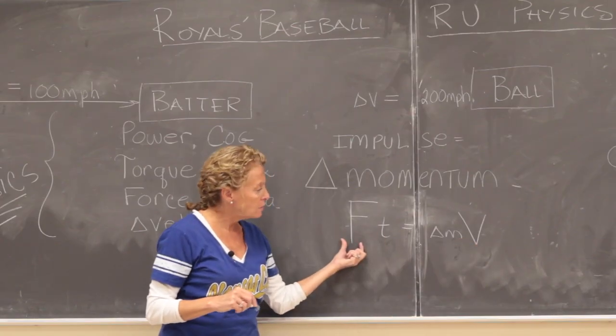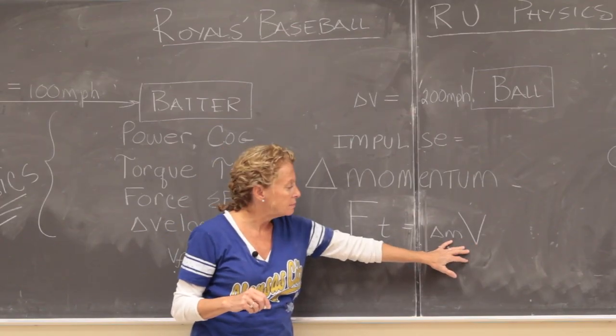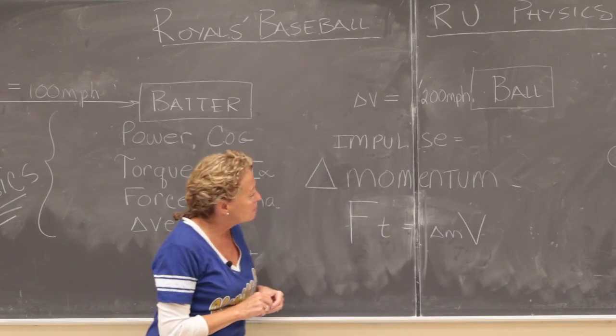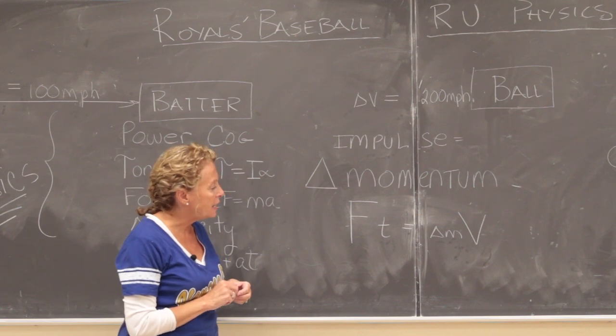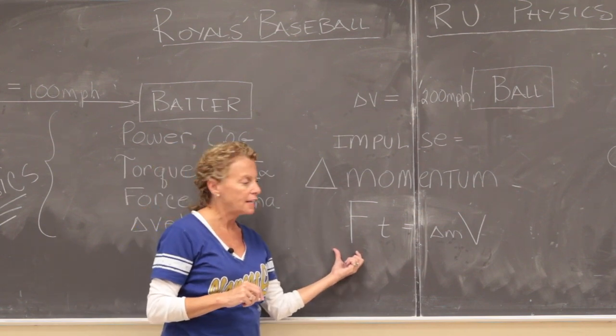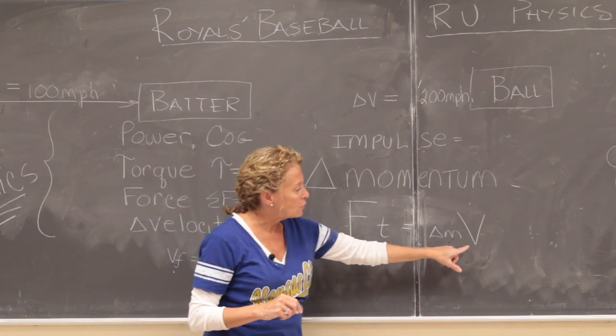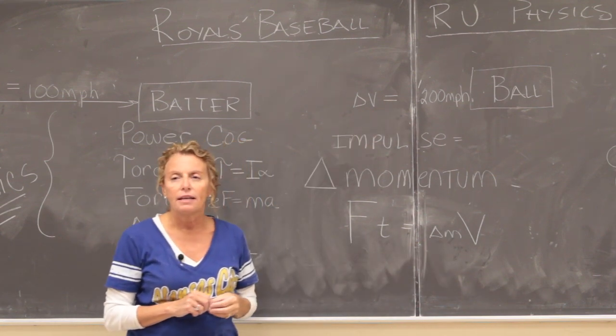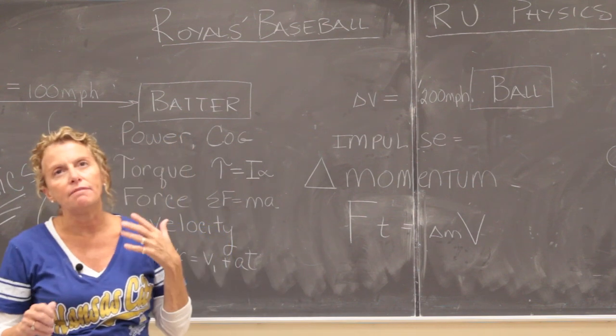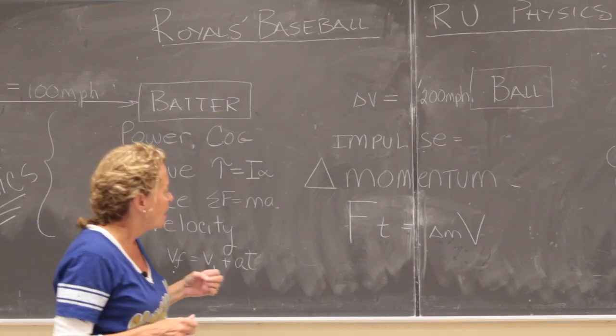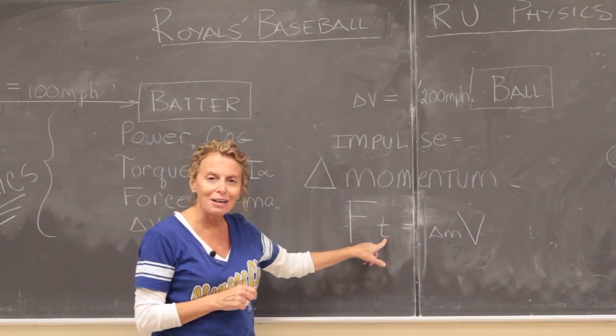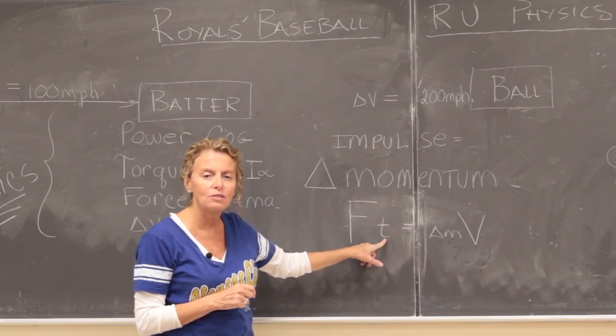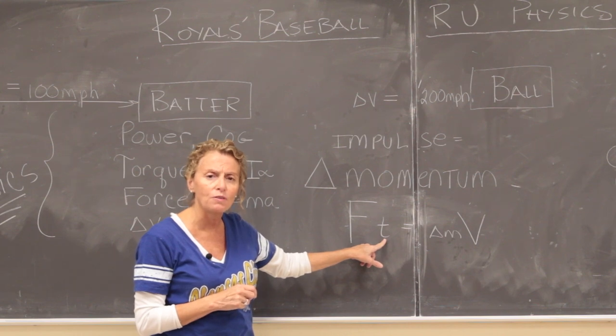Well the bigger you make the force the bigger the change in momentum. The smaller the mass the larger the change in velocity. So we did some calculations and we wanted to see how big that force actually is. So what we did is our change in velocity here we put in 200 miles an hour. The mass of a ball is about the mass of an apple and a half. And the time of contact we looked up and it said 0.7 milliseconds which is 0.0007 seconds, a really small point of contact.